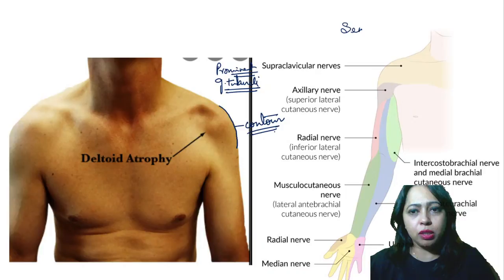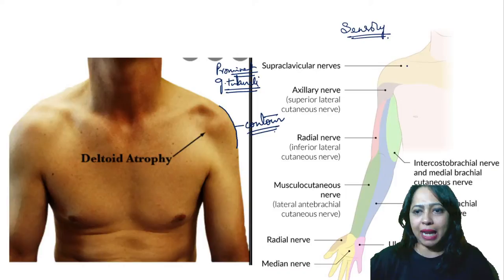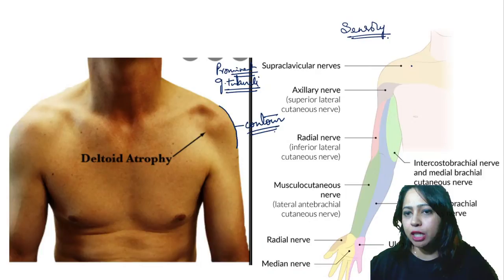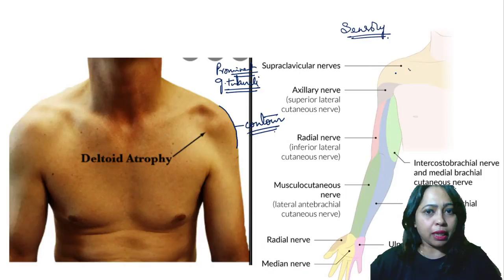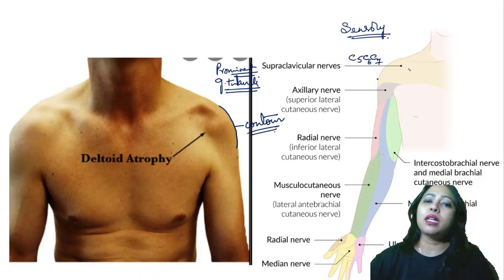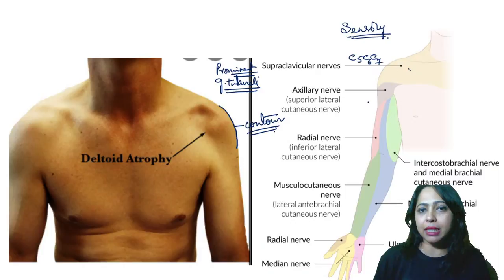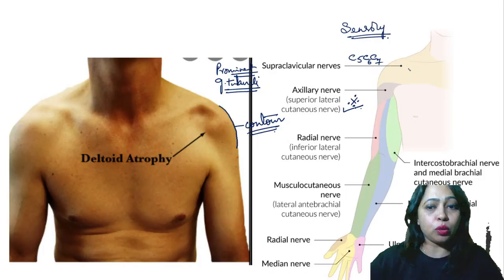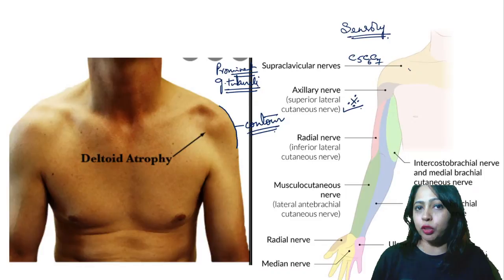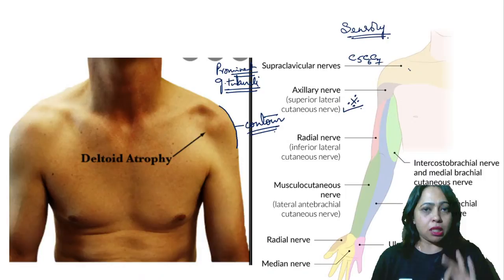For the sensory side, the supraclavicular nerve supplies the region above the clavicle, with root value C5, C6, C7. The axillary nerve has both motor and sensory parts. The sensory branch is the superior lateral cutaneous nerve — a very important name to remember. It supplies the regimental badge area, the lower portion of the deltoid. So it is the superior lateral cutaneous nerve that supplies that area of skin.